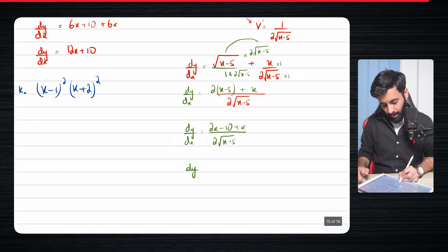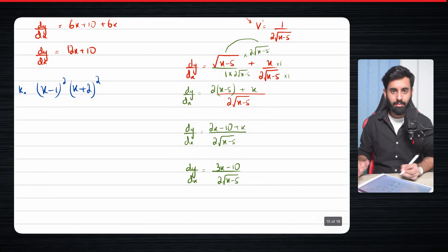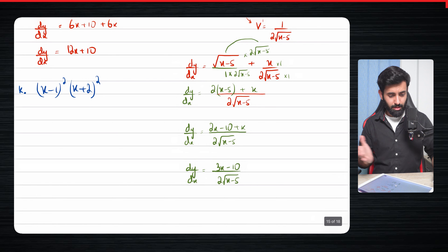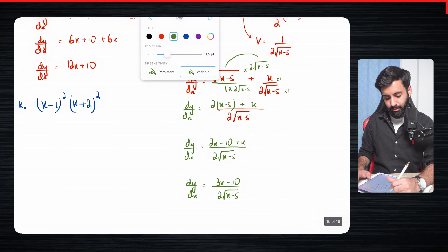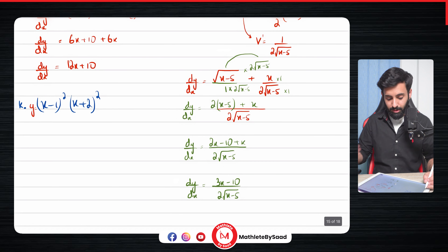So dy/dx equals (2x minus 10 plus x) over 2√(x−5), which simplifies to (3x−10) over 2√(x−5). Since the textbook provides simplified answers at the back, it's a good habit to simplify your answer as it makes checking much easier. This is the correct answer.